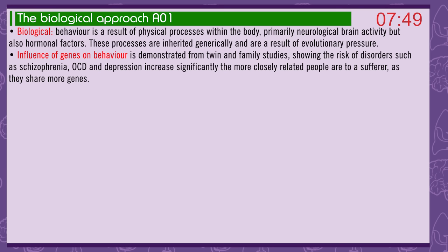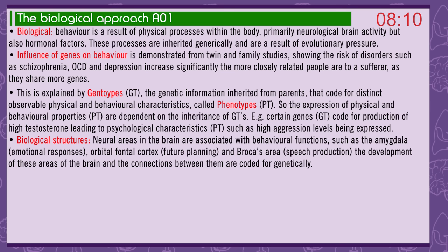The biological approach suggests behaviour is a result of physical processes within the body — primarily neurological brain activity but also hormonal factors — and these processes are inherited genetically and are the result of evolutionary pressure. Twin and family studies demonstrate the influence of genes on behaviour, showing the risk of disorders such as schizophrenia, OCD, and depression increases significantly the more closely related people are to a sufferer. This is explained by genotypes — genetic information inherited from parents coding for observable physical and behavioural characteristics called phenotypes.